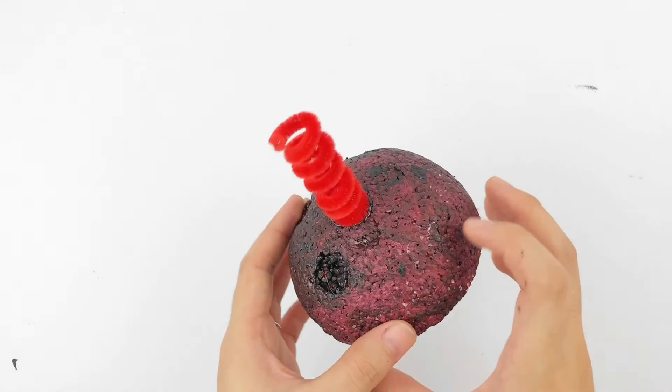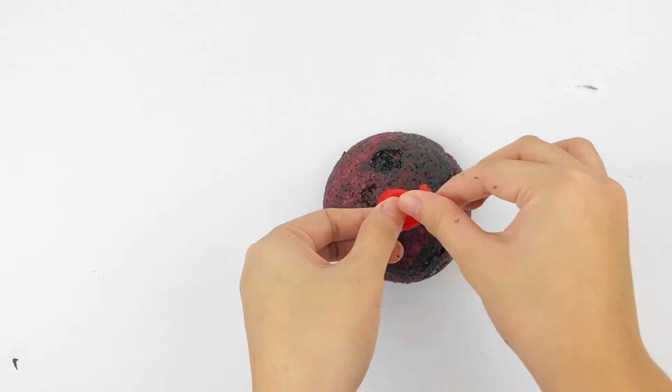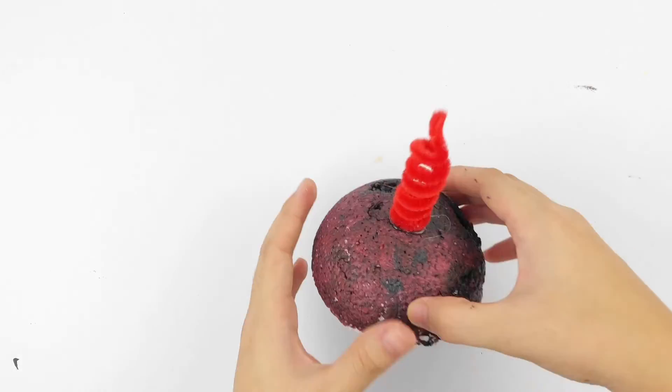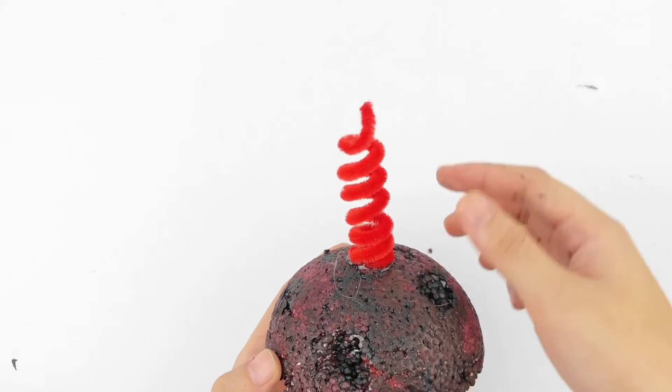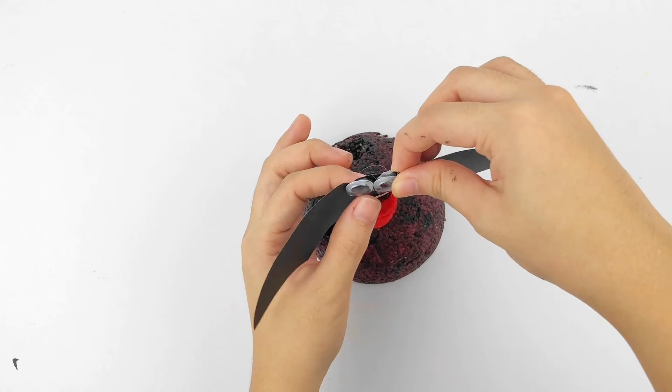After you have that spring on there, just bend that edge up of the pipe cleaner spring just a little bit. And then you're going to be gluing on the bat body onto that straight edge of that pipe cleaner.